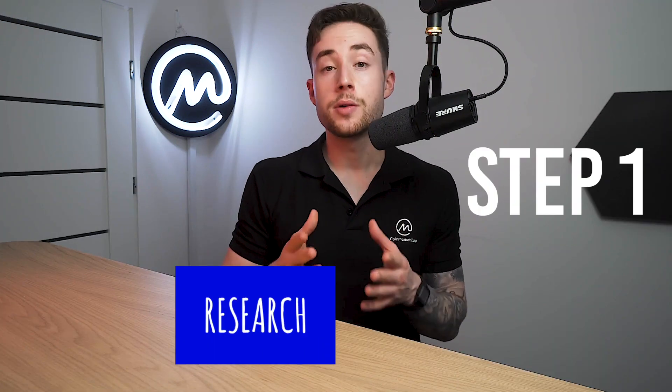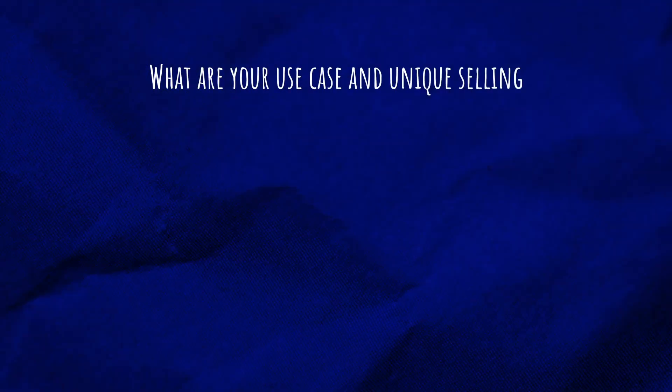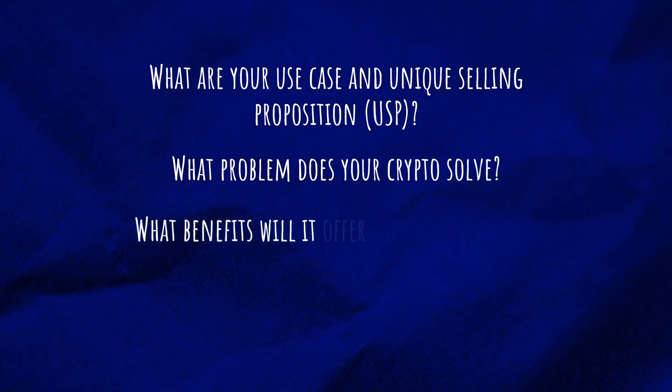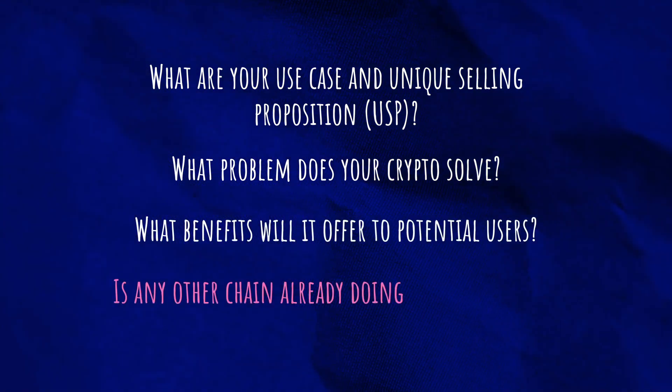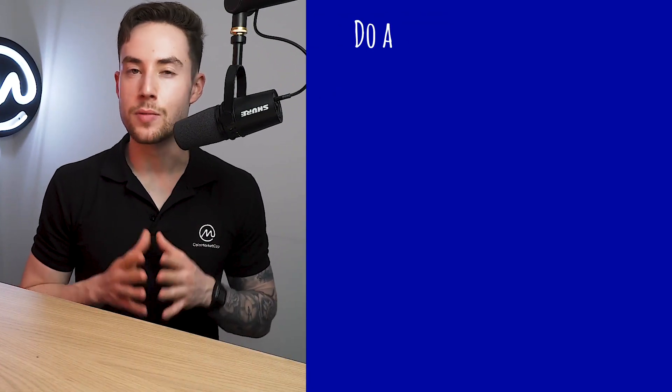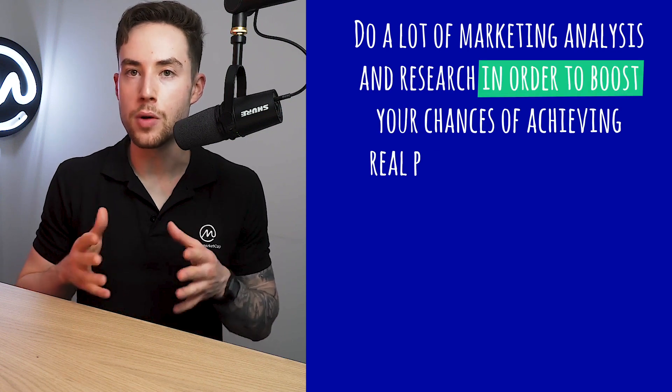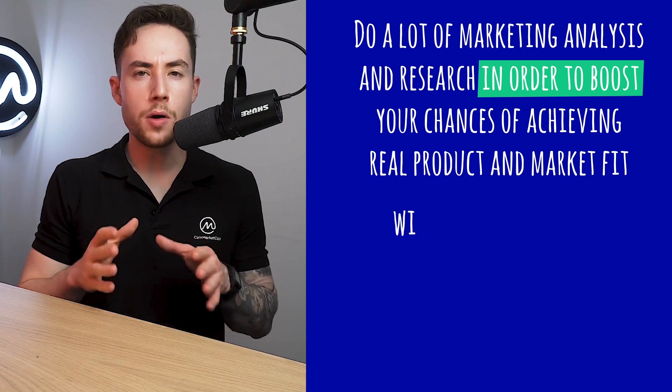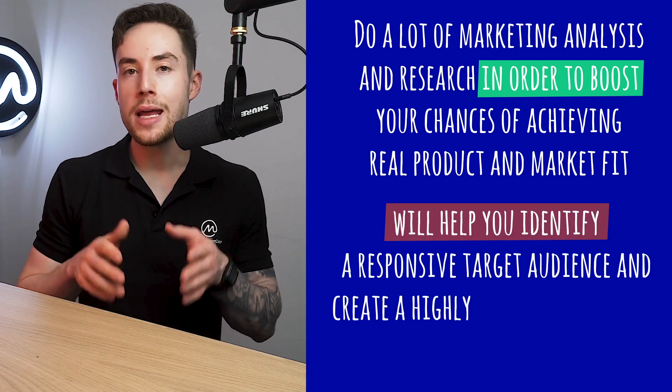Here is the step-by-step guide on how to create a cryptocurrency, kept general and simple, assuming you're creating a cryptocurrency with a real purpose and vision. Step one: research the use cases. Before you start building, figure out the use cases and unique selling proposition, what problem it solves, what benefits it will offer to potential users, and whether any chain is already doing it — and if so, can you do it better? Creating a new crypto asset is similar to launching a new startup business, and the same planning is required. Do a lot of marketing analysis and research to boost your chances of achieving real product-market fit.